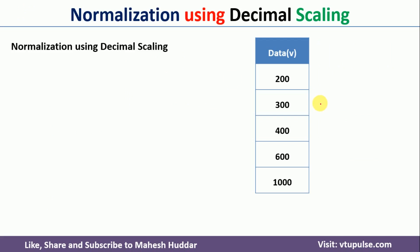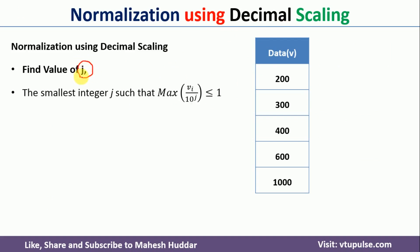The final normalization technique is normalization using decimal scaling. In this case, we identify the value of j — the smallest integer j such that φ / 10^j ≤ 1, where φ is the data point. We need to find the maximum of φ / 10^j which is less than or equal to 1. For the first data point, 200 / 10^1 = 20, which is not ≤ 1, so j = 1 is not possible. Trying j = 2: 200 / 100 = 2, still not ≤ 1.